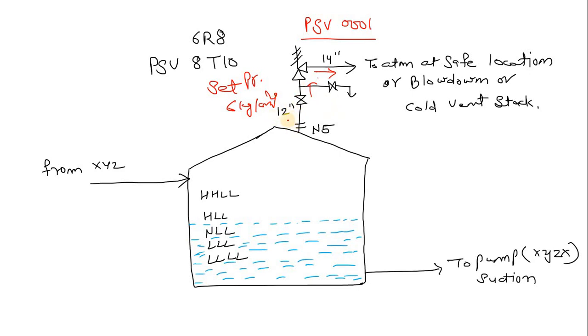Now, what we are going to discuss: if the inlet size of a PSV is 12 inch and the outlet size is 14 inch — or if the PSV is '8 T 10' or '6 R 8' — it means that the outlet nozzle size is higher and the inlet nozzle is lower. But why is it so? That's what we are going to discuss.